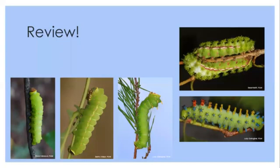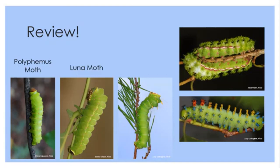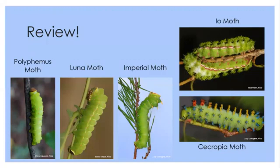Let's do a quick review of the green-bodied silk moth caterpillars, as they look very similar. The polyphemus has a brown head and faint yellow bands across the segments. The luna moth has a faint yellow stripe — these two are very easy to confuse. The imperial moth has those yellow barbed horns. The io moth has a red and white stripe and branched spines. The cecropia moth has different colored knobs — blue, yellow, and red — with spikes on them.